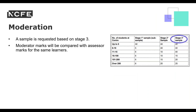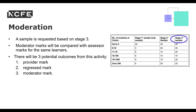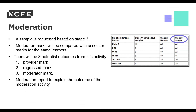You will be asked to submit marks for each learner on the portal, and these marks will be used to select learners for sampling based on the JCQ sampling strategy. A sample will be requested based on stage 3, and you will be able to view learners selected for sampling on the portal the day after the window closes. Centres will then be required to view the sampling plan and upload learner evidence for sampled learners within 48 hours. During moderation, the moderator will assess the sample, and following the quality checks, one of three outcomes will be applied: the provider mark has been accepted, the regress mark has been accepted, or the moderator mark has been accepted. You will receive a moderation report explaining the outcome along with areas performed well and areas for development.